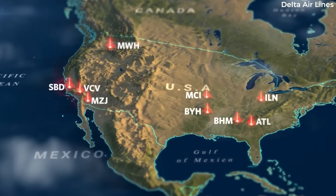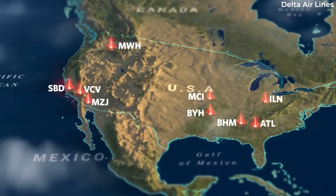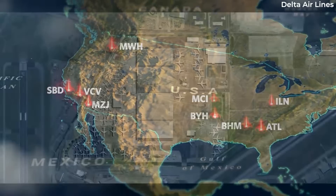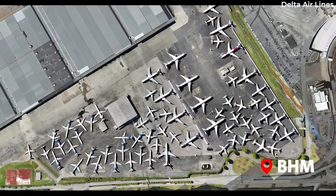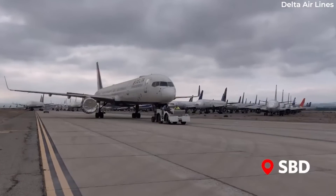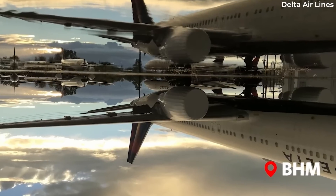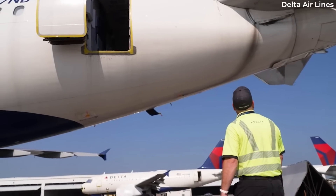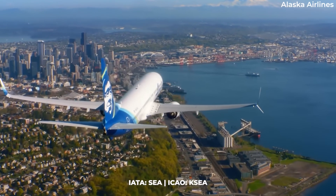If you've traveled by air, you've most likely seen three-letter codes on your boarding pass. LAX or JFK might be the most well-known American examples. These three-letter airport identifiers are known as the IATA airport codes and are generally used by commercial airlines when identifying their destinations.